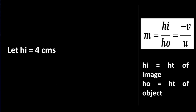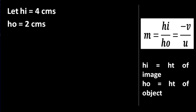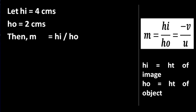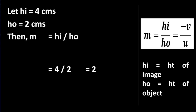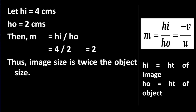Let us understand this with the help of an example. Let the height of image be 4 centimeters and the height of object be 2 centimeters. Then magnification would be HI upon HO, that is 4 upon 2, which is equal to 2. This means that the image size is twice the object size.